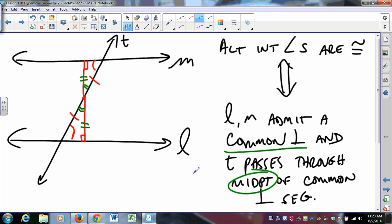And the proof the opposite way goes in a similar fashion. If alternate interior angles are congruent, then yes there is a common perpendicular and it's a special common perpendicular.